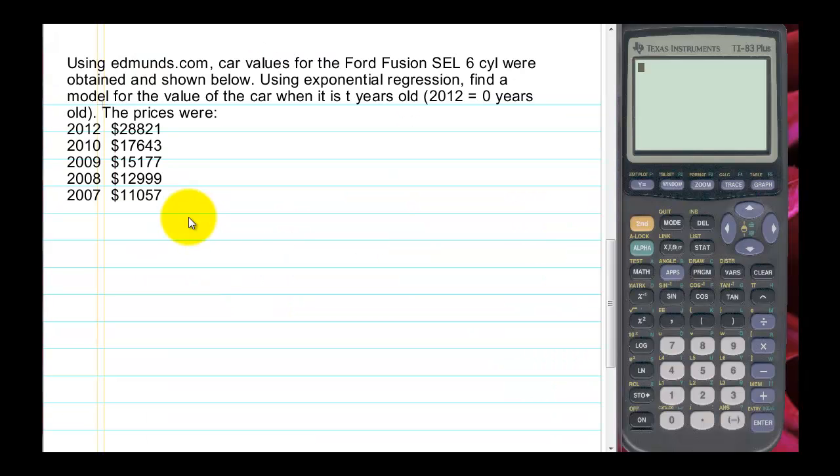Mr. T with our second portion of our exponential modeling tutorial. In this example, we have data collected about car values. You might remember when we studied exponential growth and decay that one of the examples we used was the value of cars over time that they depreciated. In this example, I've used a website called Edmunds.com to find car values for a Ford Fusion. I picked a particular model and got the new car price in 2012 and used car prices for a number of years. And we want to model this and come up with a formula that would predict the value of the car over time.